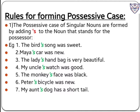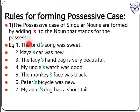Now, rules for forming possessive case. The first rule is: the possessive case of singular nouns is formed by adding apostrophe s to the noun that stands for the possessor. In the first example: the bird's song was sweet. Over here the song belongs to whom? It shows possession to the bird. So bird is the possessor, and after bird we put apostrophe s to show the possession — that the song of the bird was sweet.